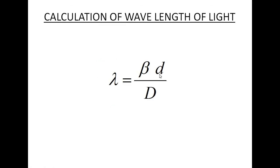Now we have calculated the width of each fringe β, and the distance between the two sources d. The distance of the screen or eyepiece from the sources, D, can be directly measured from the optical bench used in the experiment. By putting these values into the formula, we can very easily calculate the wavelength of monochromatic light.